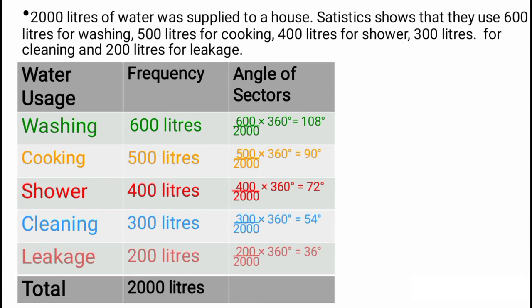You can verify this answer with a calculator, but we can also verify it in a very simple way. If we add the angles of sectors together, we are supposed to arrive at 360, which is the angle in the circle. So 108 plus 90 plus 72 plus 54 plus 36 — if you verify correctly, you would have 360. We put that down in the row for total.